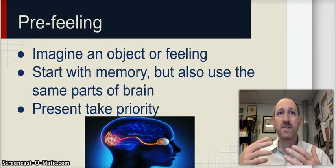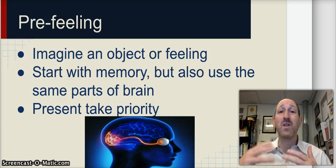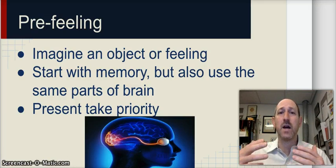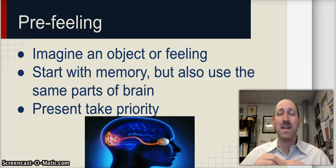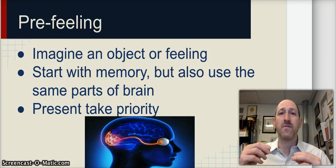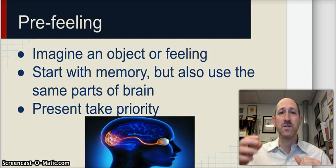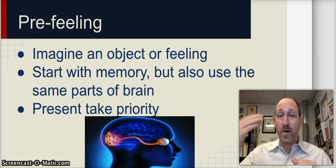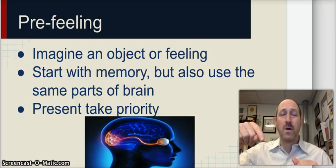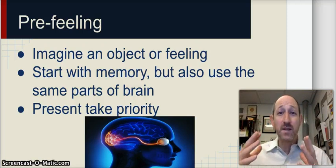So the one thing you start with saying, well, I'm going to use my memory of previous feelings to try and construct an imagination of my future feelings. At the same time, the only way I can think about feelings or objects for that matter is to use the same exact parts of my brain that are processing my feelings or my visual field right now. And the present always takes priority.